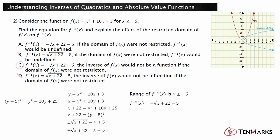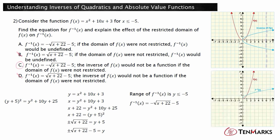Let's look at a picture to help understand why domains must be restricted. The first graph shows f of x equals x squared in red and its inverse — the positive and negative square root of x — in blue. You can see the inverse is not a function because it does not pass the vertical line test. However, if the domain of f of x is restricted to include only one half of the graph, such as x greater than or equal to zero, then the inverse will be a function — in this case, the principal square root of x. This same reasoning applies to absolute value functions as well. The domain of quadratic and absolute value functions must be restricted for their inverses to be functions.